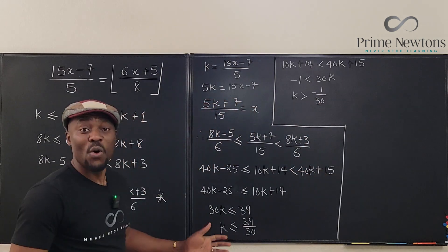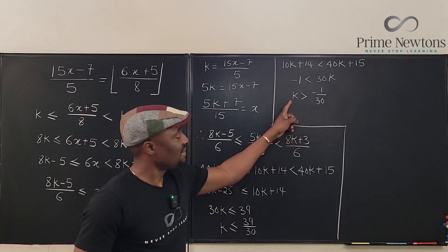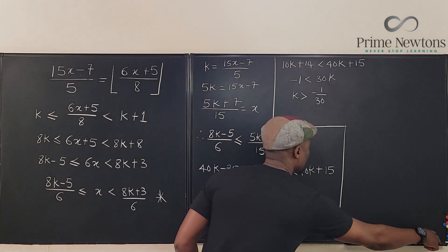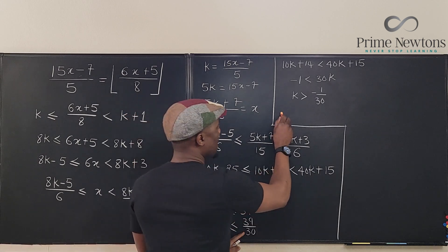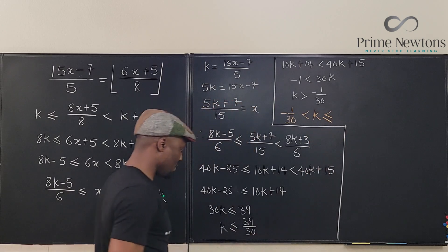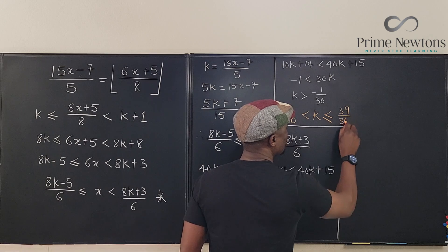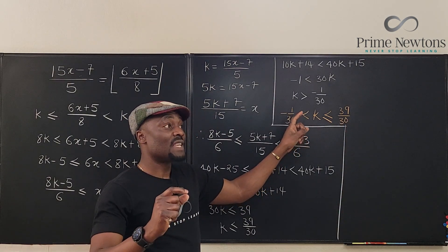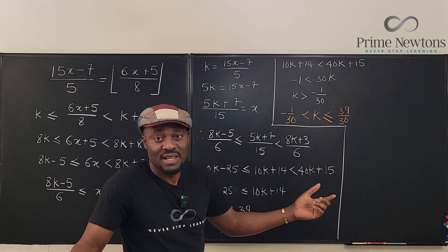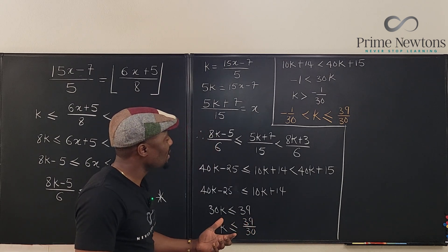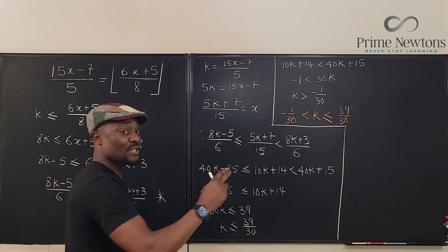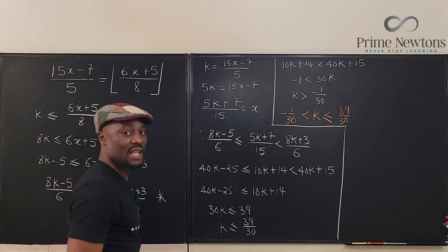Ultimately, we have −1/30 < k ≤ 39/30. Based on this result, the two integers in this range are 0 and 1 — those are the two values of k. Since x = (5k + 7)/15, these are our two sources for the answer. We just need to plug in both values of k.